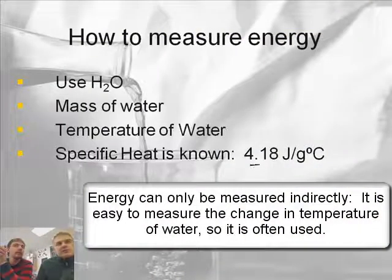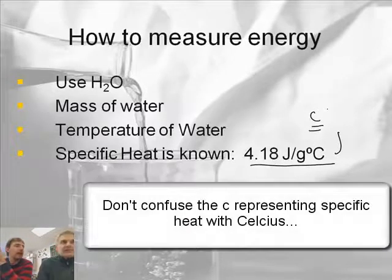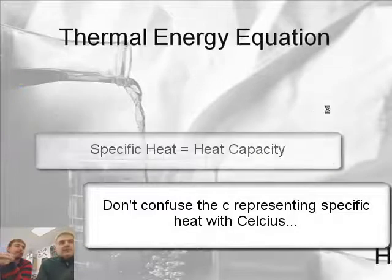There's a new word here, something called the specific heat, and we're going to learn about that a little bit later. But that's abbreviated C, and it's also called heat capacity. So two different terms, specific heat and heat capacity, are the same thing.